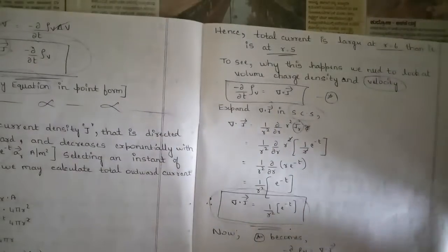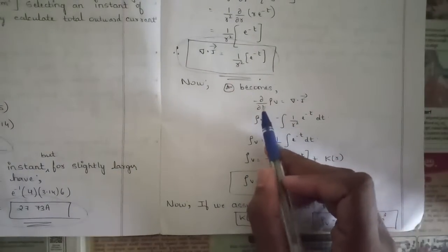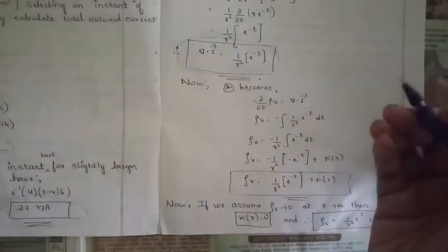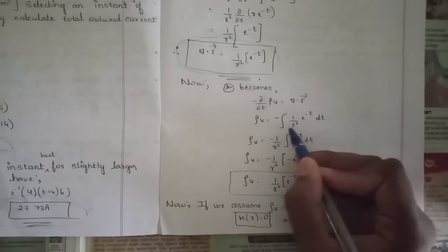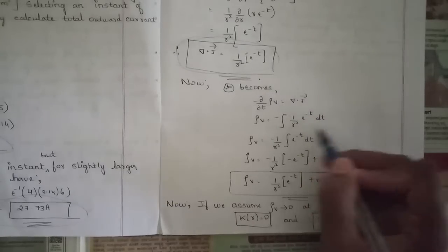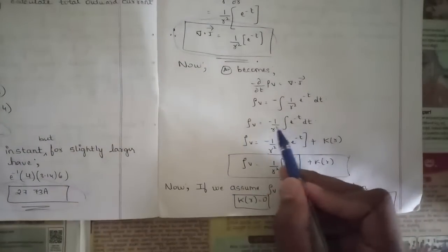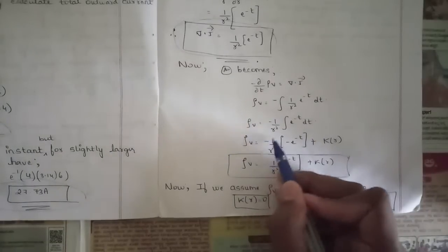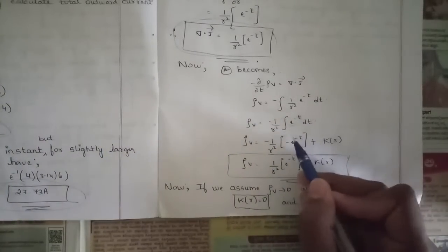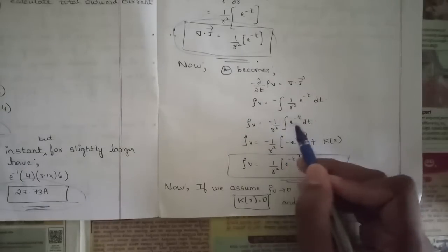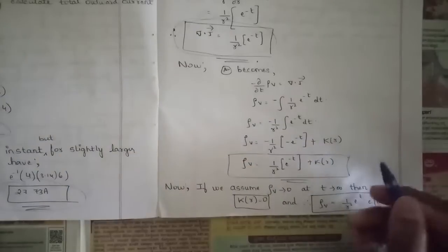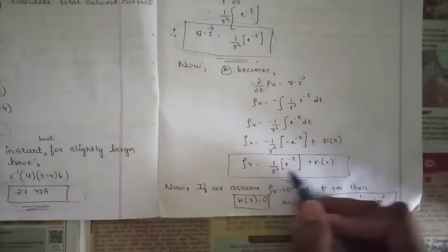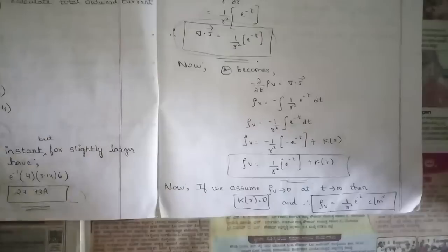From the continuity equation, -∂rho_V/∂t = ∇·J. So rho_V = -∫(1/r²)·e^(-t) dt. Taking 1/r² outside the integral (it's constant with respect to t), we get rho_V = -(1/r²)·(-e^(-t)) + k(r) = (1/r²)·e^(-t) + k(r), where k(r) is the constant of integration.